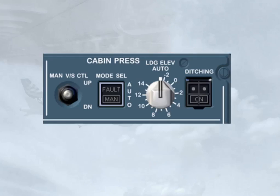The landing elevation selector normally remains in the auto position. Landing elevation, which is required by the pressurization system, is then provided by the FMGS based upon the elevation of the destination airport. If the landing elevation is not available from the FMGS, then it can be set manually using this selector.